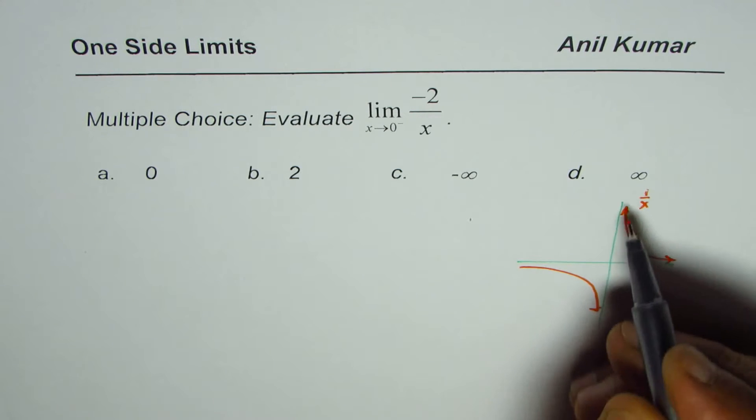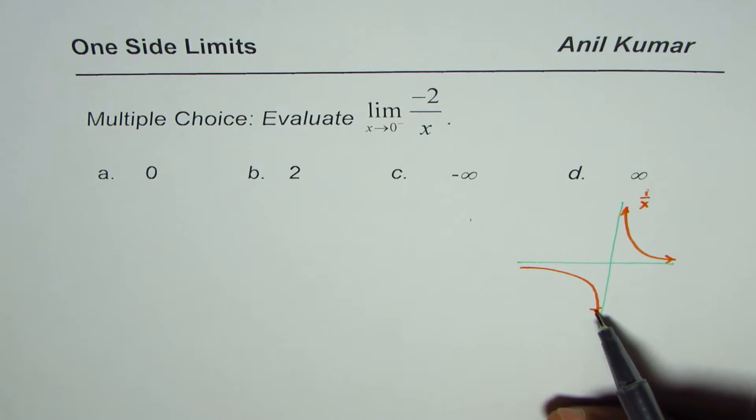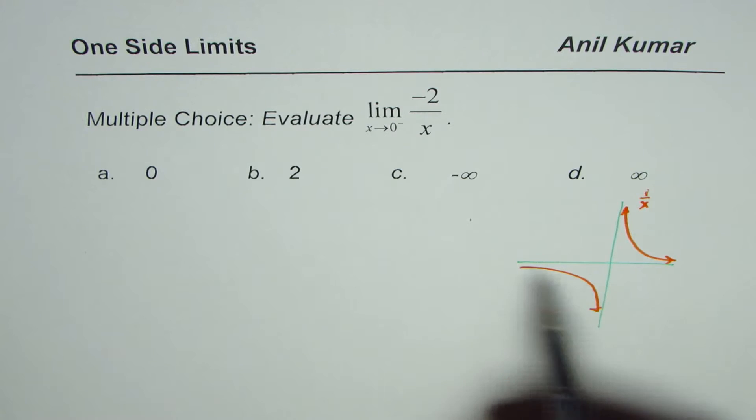For 1 over x, when you are approaching from the left side, it is minus infinity, right?